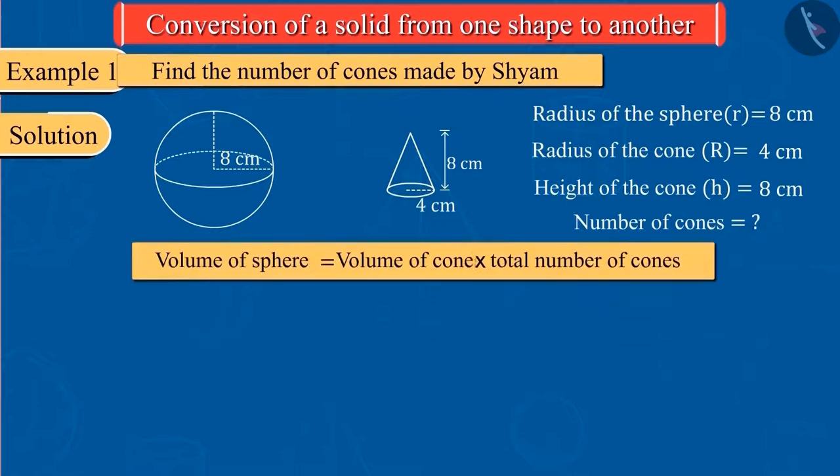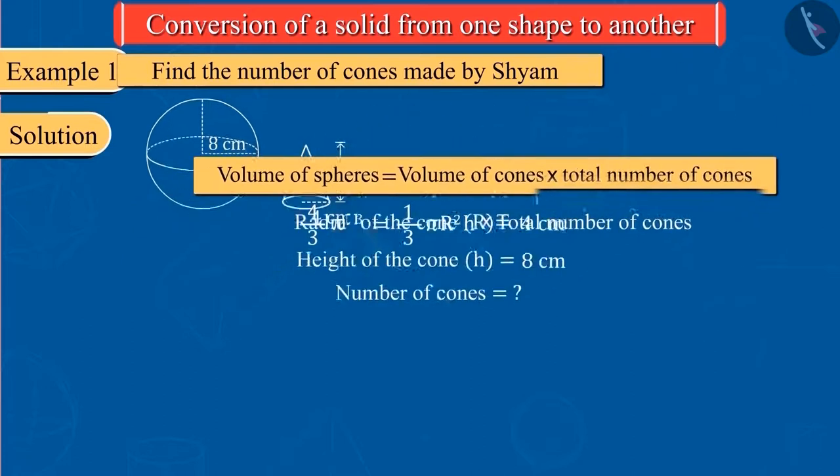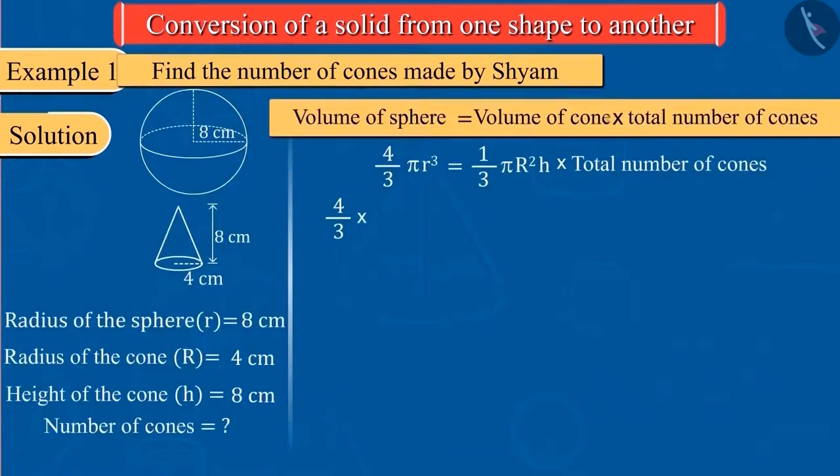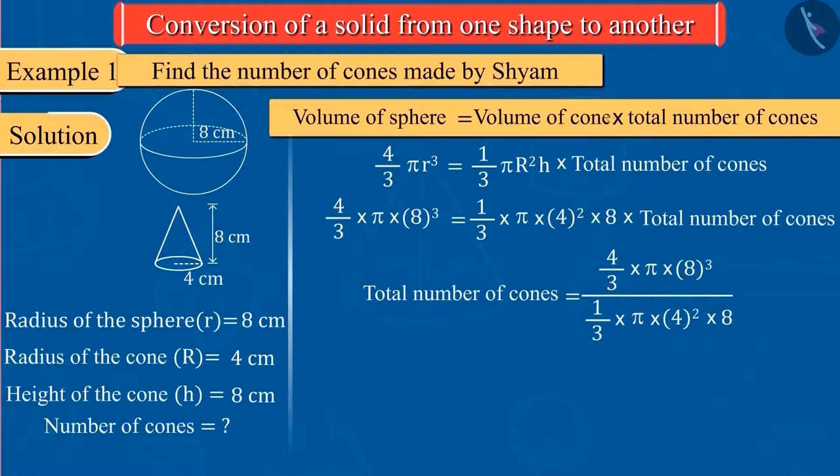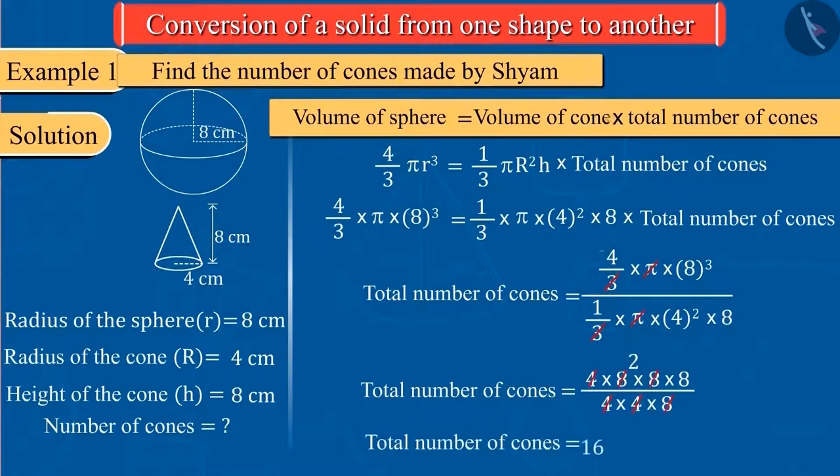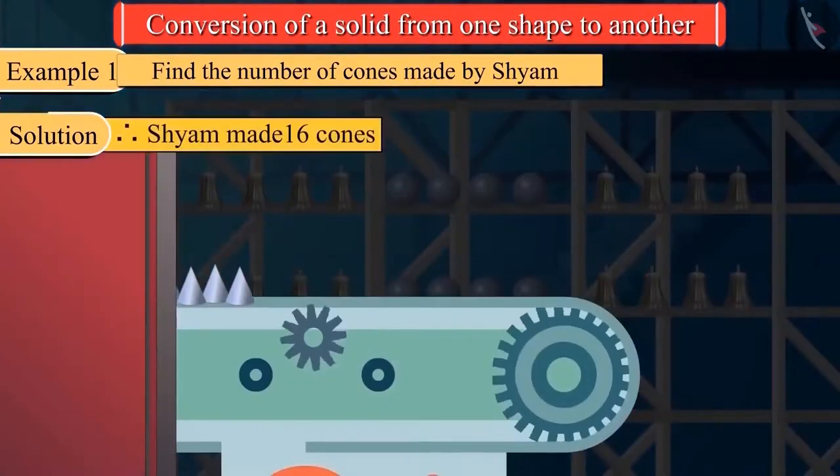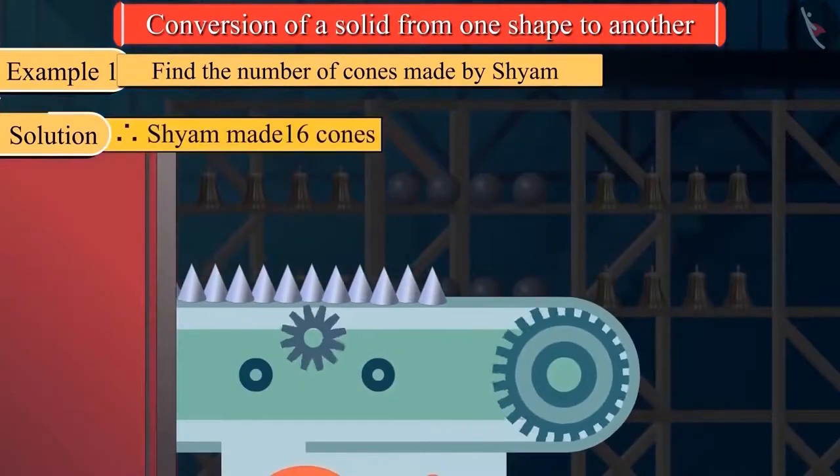We know that the volume of sphere and cone can be determined by these formulas. Substituting all values... So, Sharm makes 16 cones in this way.